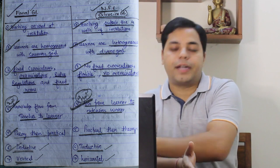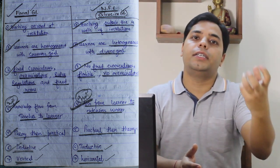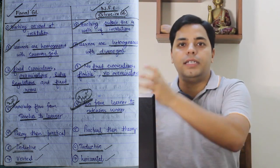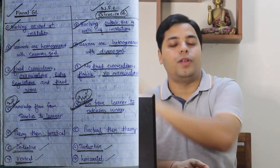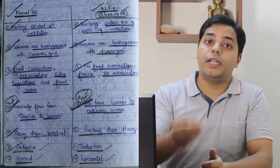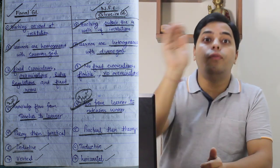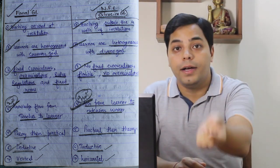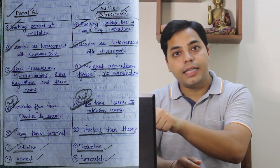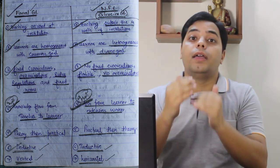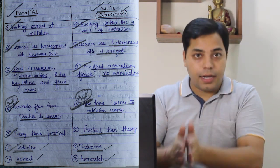In formal education, theory comes first, then practical — for example, a teacher teaches PRA in theory class and then takes students to the village for practical. In non-formal education, practical comes first and then theory — for example, in a demonstration we first show farmers the new rice variety in the field, and then explain its qualities. This is because adults have experience and need problem-solving, problem-oriented answers. The approach in formal education is deductive — from general to specific. In non-formal education, it is inductive — from a particular farmer's problem, we generalize the concept for all farmers.